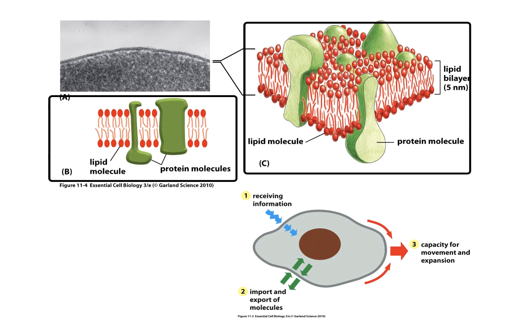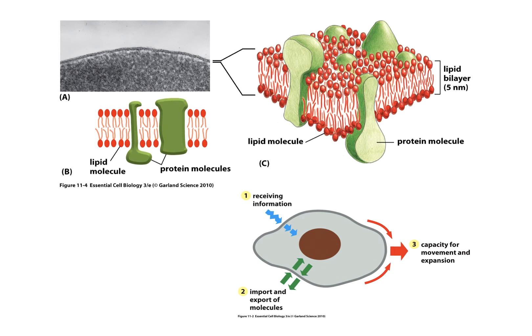Membranes separate the inside of the cell from the outside. The proteins embedded in the membrane are responsible for receiving and transmitting information from the outside to the inside, as well as import and export of molecules — those are highly controlled. The expansion of the membrane allows flexibility of the cell and allows movement in some types of cells, not all.